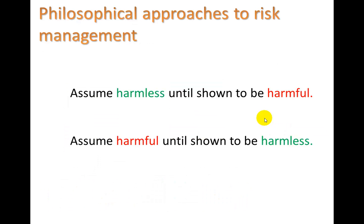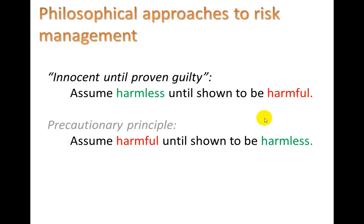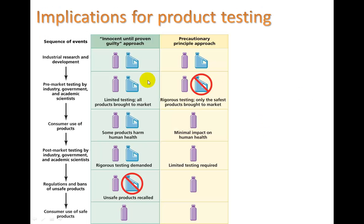There are two basic philosophical approaches to policymaking. You can assume something is harmless until shown to be harmful — this is called the 'innocent until proven guilty' approach. Or you can assume it's harmful until shown to be harmless — this is the precautionary principle. In the innocent until proven guilty approach, you do industrial R&D, some pre-market testing by industry, government, and academic scientists to determine it seems safe, and then consumers use it.